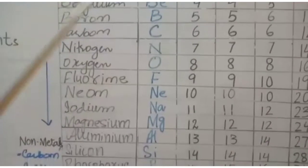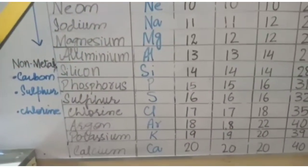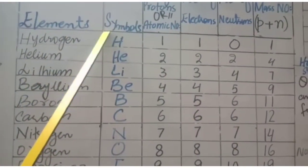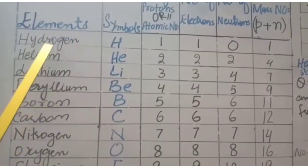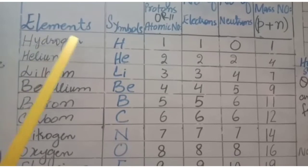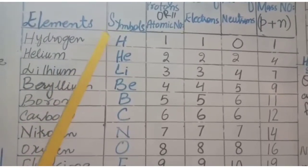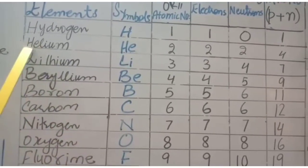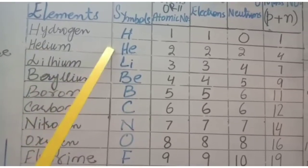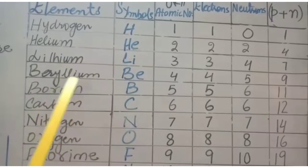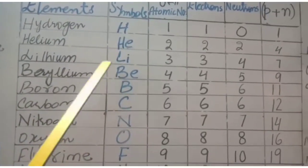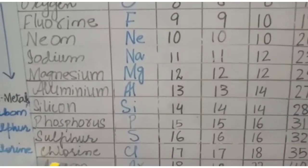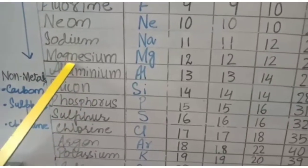Scientists have given these elements symbols following some rules. Some elements use only the first letter — for example, hydrogen (H), boron (B), carbon (C), nitrogen (N). Some elements use the first two letters — for example, helium (He), lithium (Li), beryllium (Be). Sometimes the symbol uses the first letter plus another letter, like chlorine (Cl) — first letter C, then l.